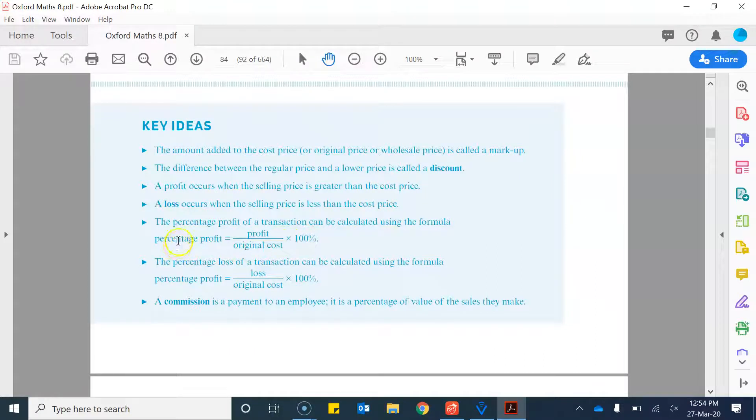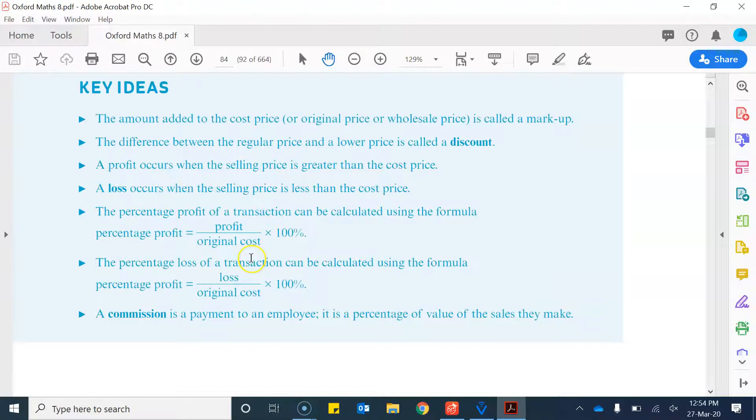If we want to work out percentages of a profit made on a particular, maybe, clothing item or whatever item you might be selling, then we can use this formula here. The percentage profit, the percentage of the profit is the profit divided by the original cost times 100%.